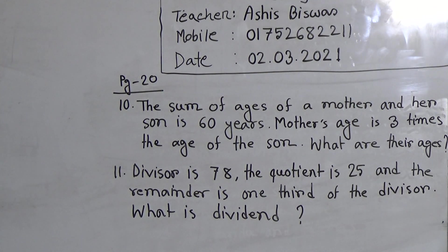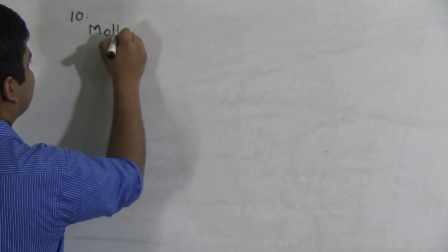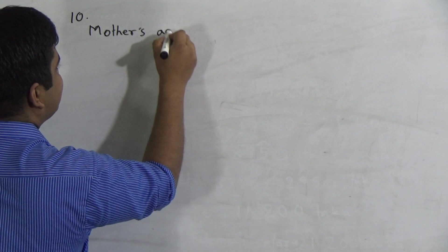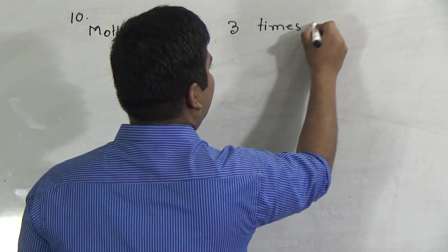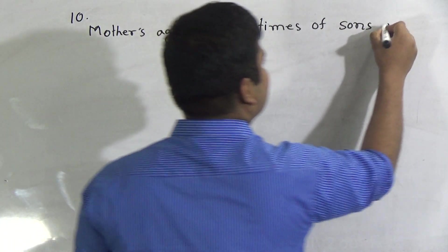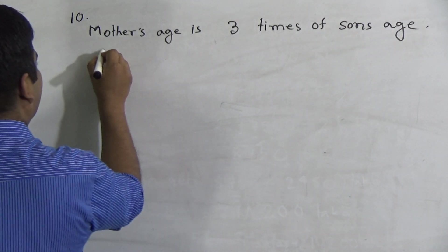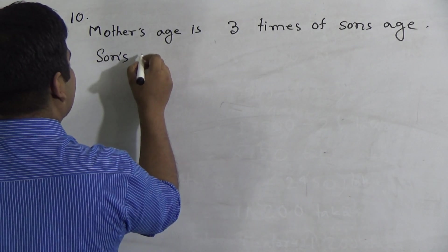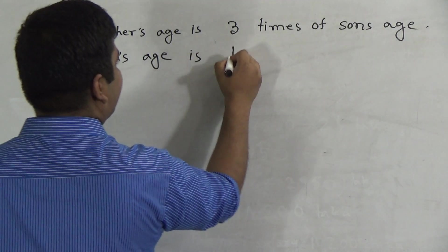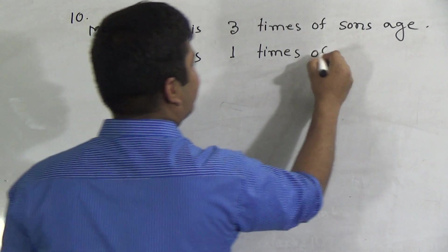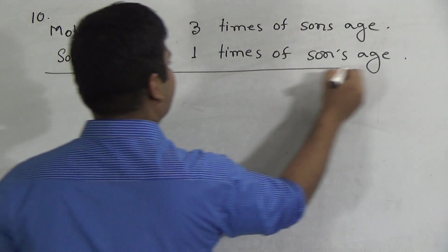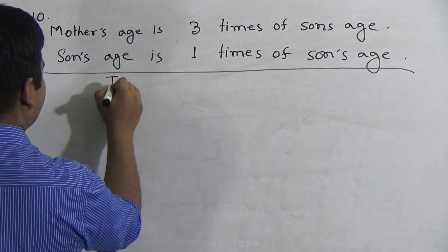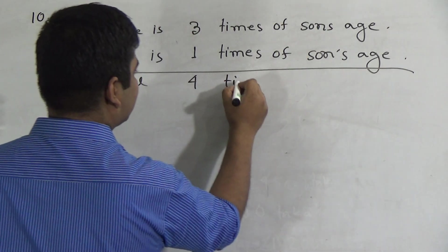So solve this math. Question number 10. Written here: Mother's age is three times of son's age. Then son's age is one times of son's age. Next we need to find out the total times. So total is four times.